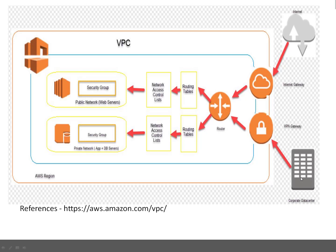If you're connecting from a corporate data center, you can use a VPN gateway, or many companies use Direct Connect for this purpose. This is a basic diagram showing how the components are coupled together.